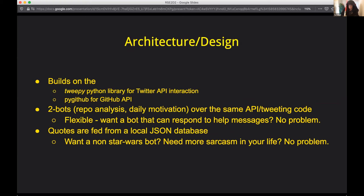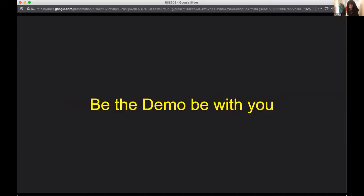In theory it would be quite easy to add a third or fourth bot — maybe something responding to help messages or other things. We also have quotes fed from a JSON database in the GitHub repository, so if you want to make a pull request to add more smart daily tweets, please feel free to help us out. And now I'm going to try to switch to the live demo.